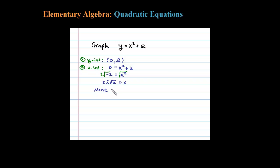All parabolas have a vertex. The x-value of the vertex can be gotten with the formula negative b over 2a.